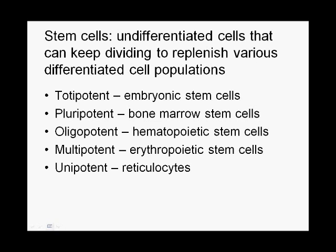What are stem cells? These are undifferentiated cells that can keep dividing. To replenish the cells in our body that wear out regularly, such as the cells of our intestinal lining, skin cells, and blood cells, we have to have a population of cells that, for our entire lives, retain the potential to keep dividing and differentiating, where some of their progeny are able to differentiate to replenish those differentiated cell populations.